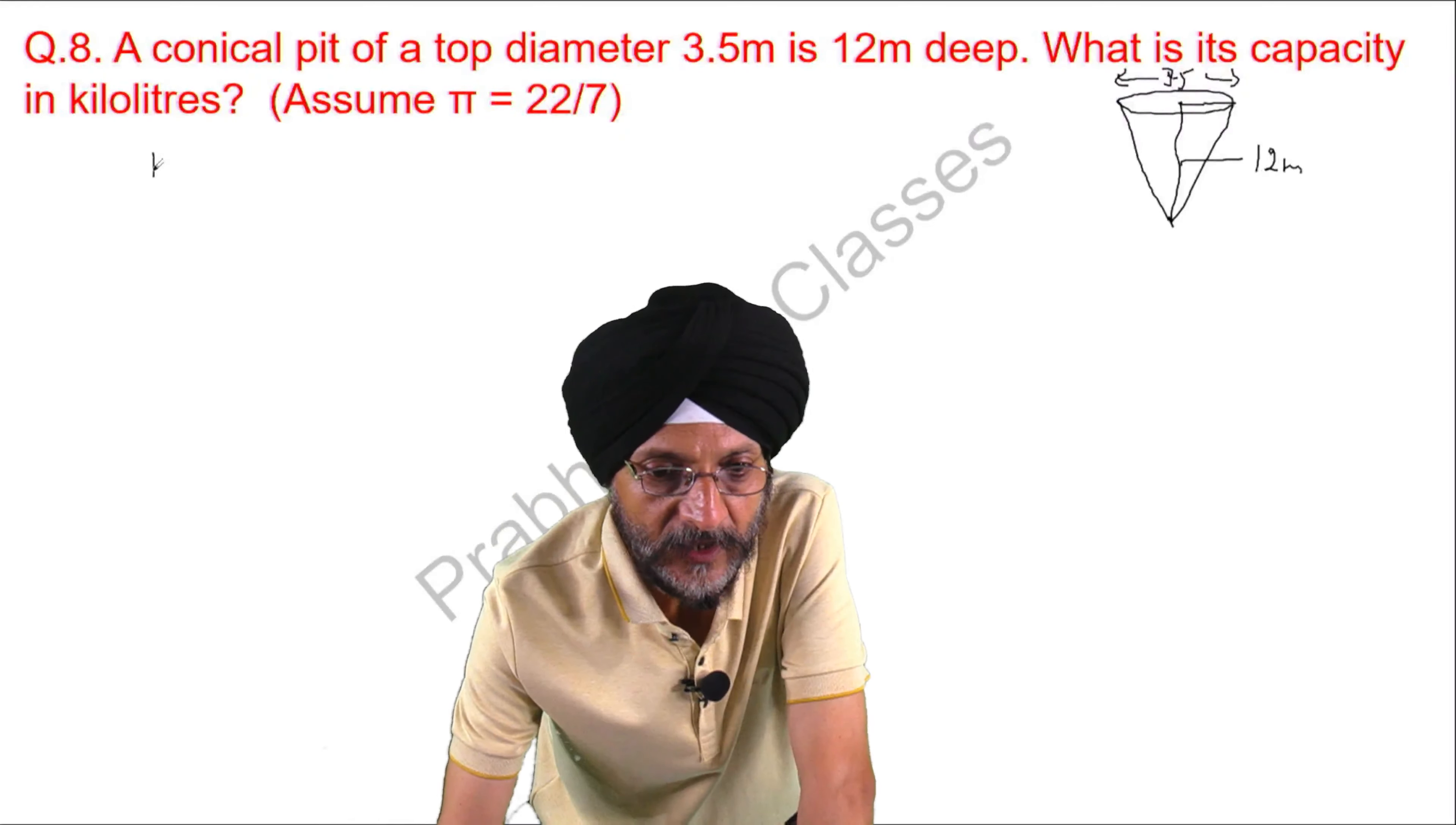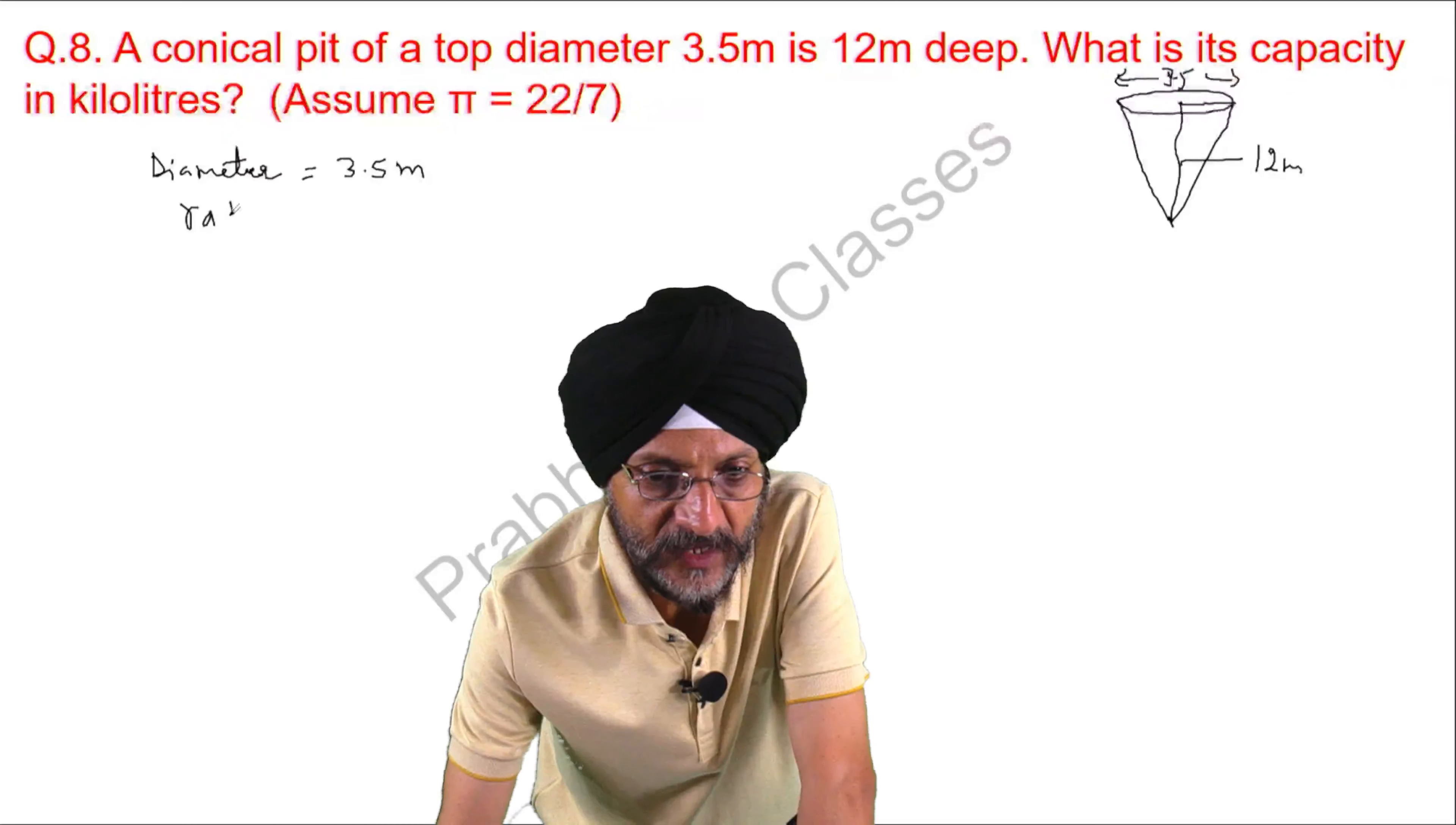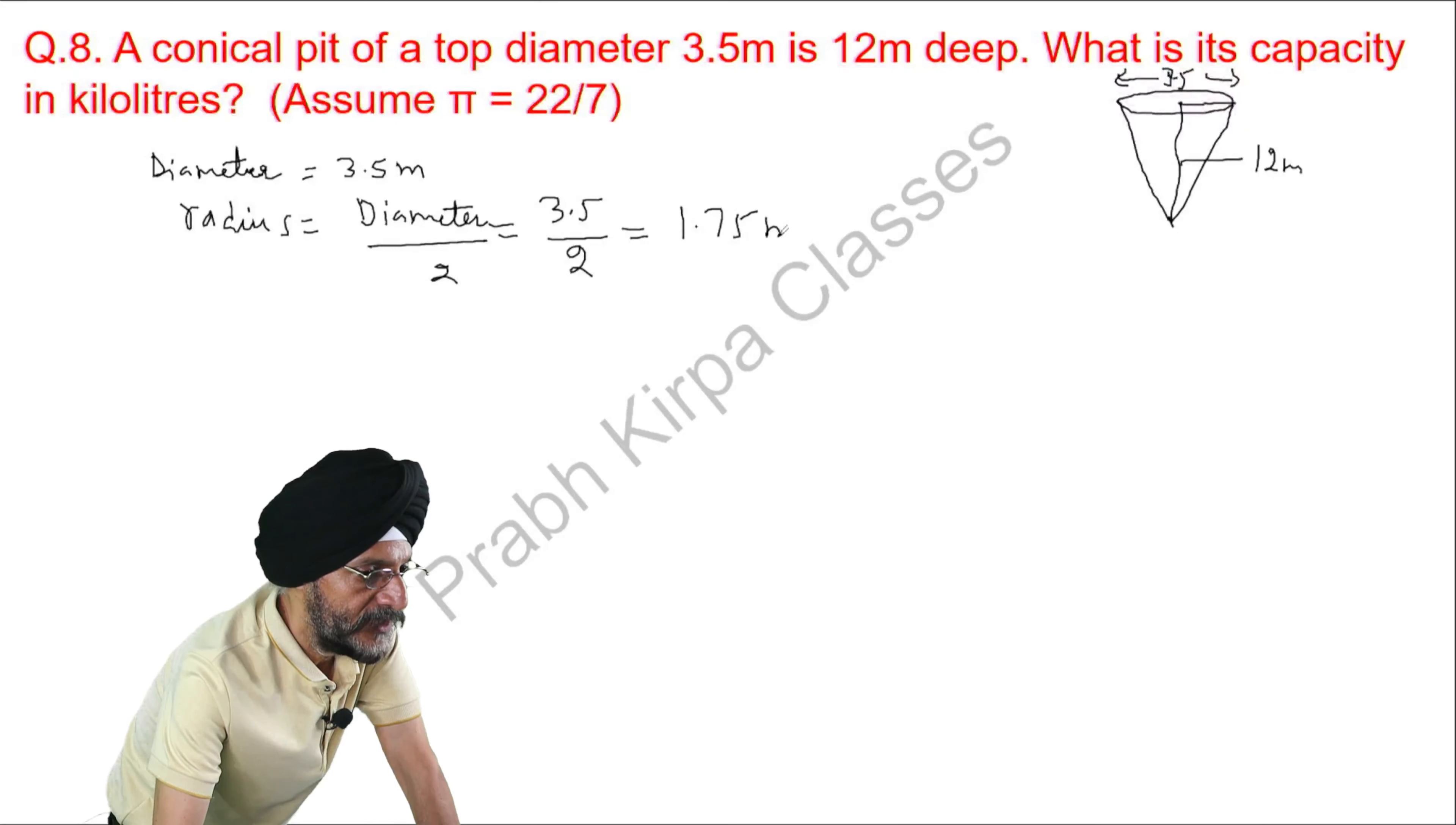So, here diameter is equal to 3.5 meter. We know that radius is half of diameter, diameter over 2. So, what is the value of diameter? 3.5 divided by 2, it is 1.75 meter. This is the value of radius.